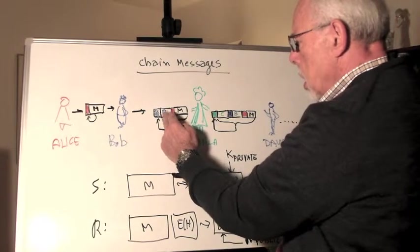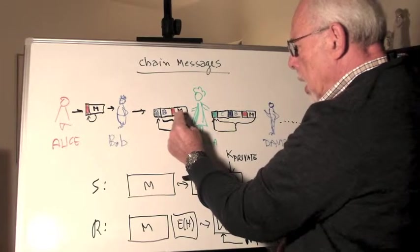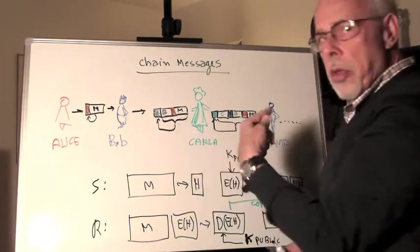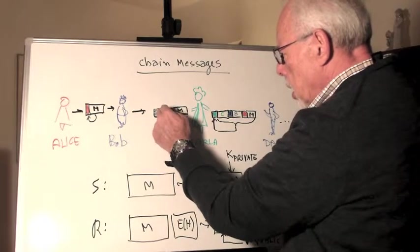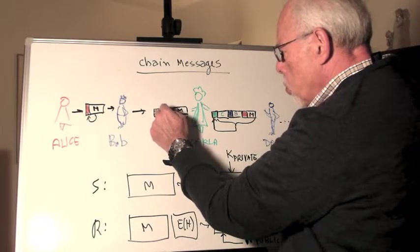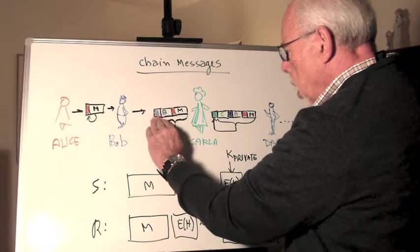He's hashing this entire package, encrypting the hash with his private key, and attaching the encrypted hash to the package. And takes everything here and sends it to Carla.